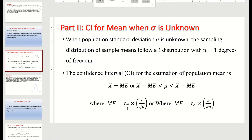First, let's know the fundamental thing required for calculation of confidence interval for mean when population standard deviation is unknown. When the population standard deviation is unknown, the sampling distribution of the sample mean follows the t-distribution with n minus 1 degrees of freedom. We already know from the central limit theorem that if sigma is unknown, the sampling distribution of the mean will follow the t-distribution.